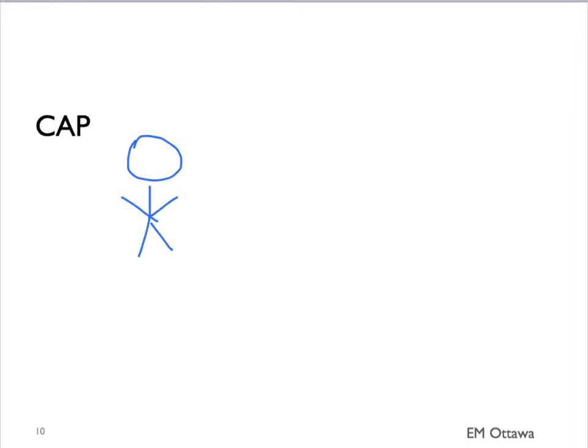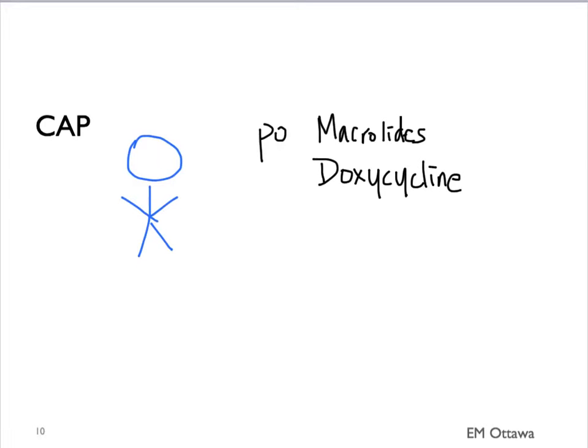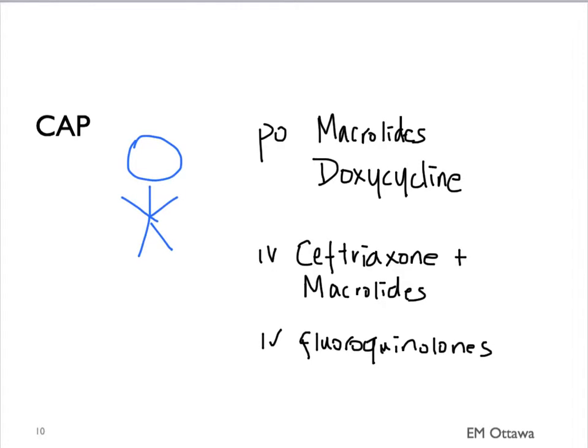First, the healthy patient who has a community-acquired pneumonia, or CAP for short. In the healthy patient, a macrolide or doxycycline are good choices. We can also consider IV antibiotics for patients who are sicker — either IV ceftriaxone and a macrolide, or IV fluoroquinolone, which is also a good choice.